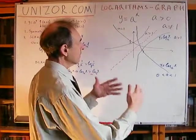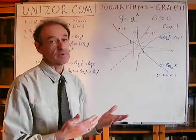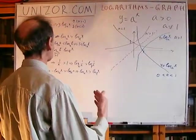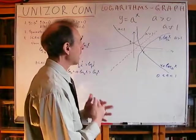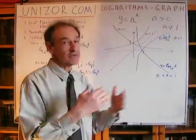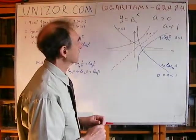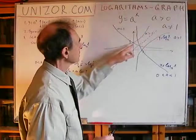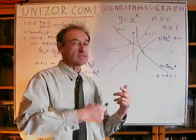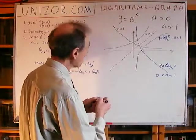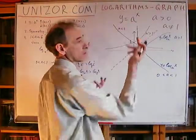That's the qualitative picture of how the graph of the logarithmic function looks. Now there are certain quantitative issues. The most important quantitative question is: what happens with the graph of the logarithmic function if a is changing? Let's go again to the graph of the exponential function. For a greater than one, the exponential function is increasing.